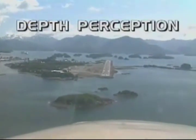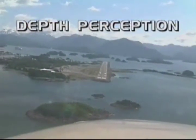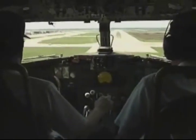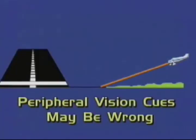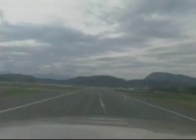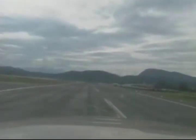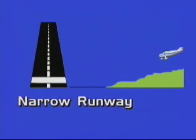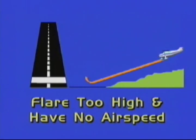Depth perception can also be a problem due to runway width and length. If you have been landing on a narrow runway and then shoot an approach to a wide runway, be aware — your peripheral vision cues may not properly determine the height above the runway during the final part of your approach and flare, and the possibility will exist for a hard landing. Conversely, if your experience is landing on a wide runway and you shoot an approach to a narrow runway, the possibility exists for you to flare too high and have no airspeed.